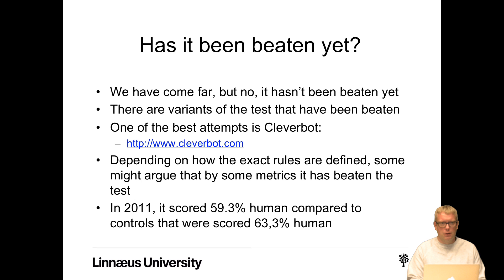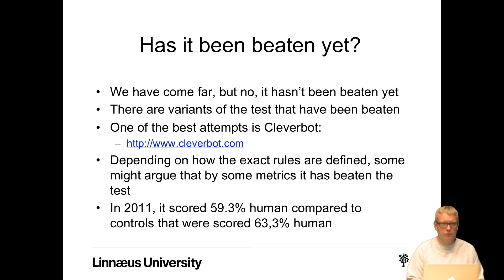Has the Turing test been beaten yet? We've come far, but arguably no. There are a few variants that have been beaten. One of the best attempts is Cleverbot. Depending on how you define the rules — since Turing didn't define them exactly — some argue it has beaten the test. In 2011, it scored 59.3% human compared to controls scored at 63.3% human. So humans got slightly more 'humanness' at 63% compared to computers at 59%, but we're getting closer.